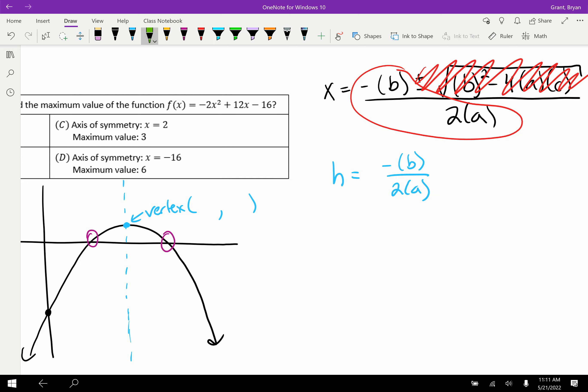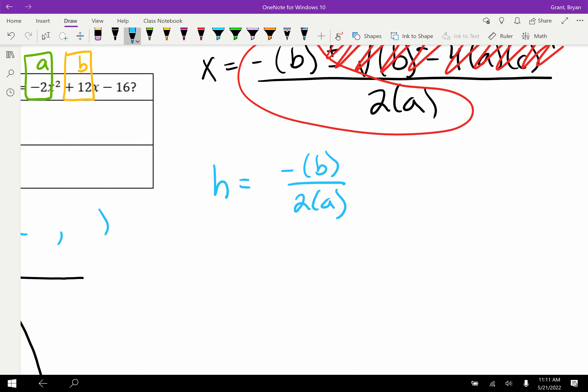So let's go ahead and take our standard form equation, identify a—that's our negative 2—and identify b, which is positive 12, and let's substitute those values in. So negative b over 2 times a, where b was 12. Don't forget the negative out front—most common mistake my students make—over negative 2. Simplifying this, negative 12 divided by negative 4 seems to be positive 3.